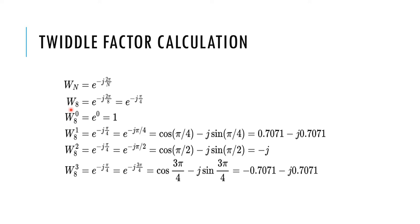So, W8 is equal to e to the power of minus j 2 pi divided by N. With N equal to 8, you get e to the power of minus j pi by 4. W8 to the power of 0 is equal to 1. W8 to the power of 1 becomes cos(pi/4) minus j sin(pi/4), which is equal to 0.707 minus j 0.707, that is cos 45 degrees minus j sin 45 degrees.